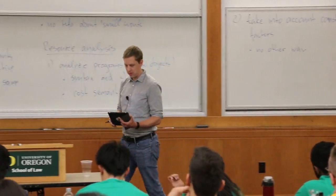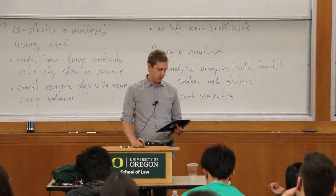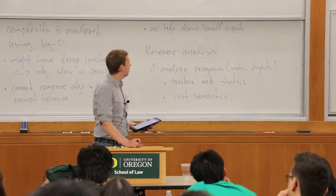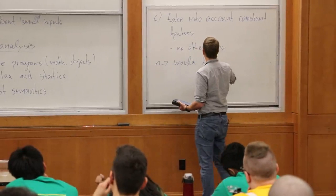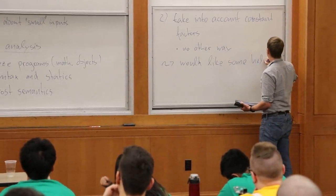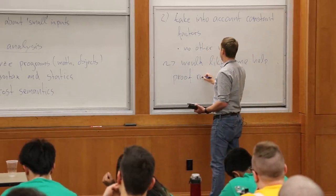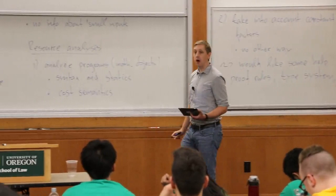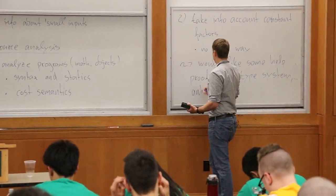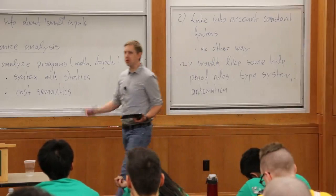Even if you only care about asymptotics, you still have to find C and N₀ — so you have to figure out the constant factors anyway in order to abstract them away. What this implies is we want some help — in the form of proof rules or a type system — to figure out what these constant factors are. Maybe even automation: you could have quicksort, and want your automatic resource analysis to fill in the constant factors automatically.